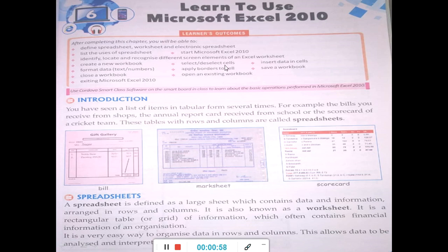Select and deselect cells. Insert data in cells. Format data — data can be a text or a number, and you can format that data. Apply borders to a cell. Save a workbook. Close a workbook. Open an existing workbook. And exit Microsoft Excel 2010.